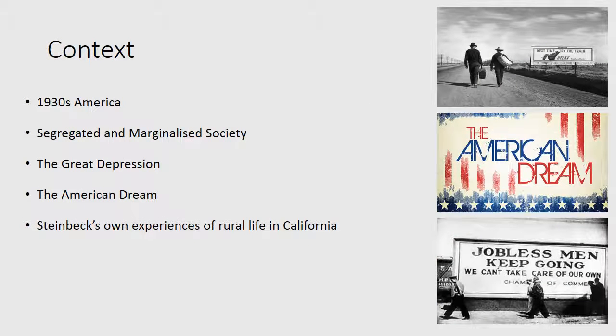It is very important to understand the social, cultural and historical context of the text. The Great Depression was an economic slump occurring in North America, Europe and other industrialized areas of the world that began in 1929 and lasted approximately ten years. It was the longest and most severe depression ever experienced by the industrial world. It caused the death of the American Dream, which is the idea that everyone in the United States has the chance to achieve success and prosperity.